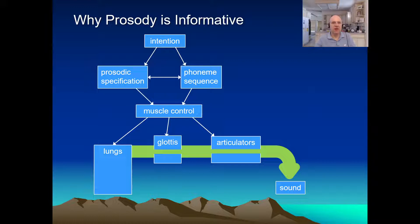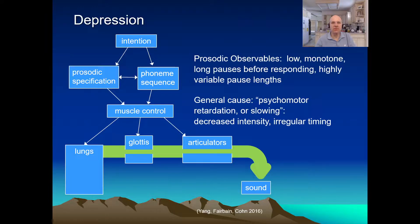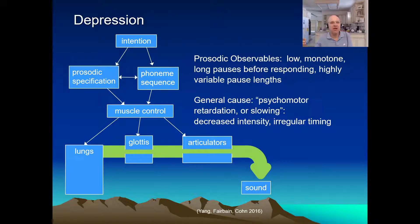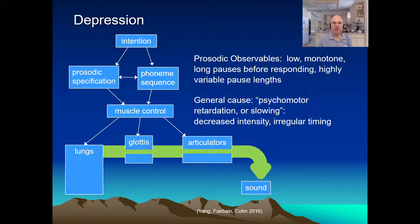Let's consider depression as a relatively simple example. The prosody of depression includes low pitch, monotone pitch, very little pitch variation, long pauses before responding, and highly variable response times. This is largely due to the general effects of depression on all muscles, not just the articulators — psychomotor retardation or slowing, decreased intensity, and irregular timing. So there's a direct causal relationship between the observables and the causes.